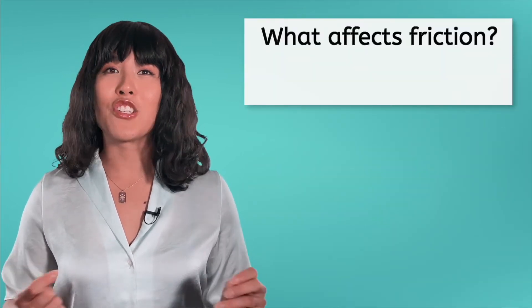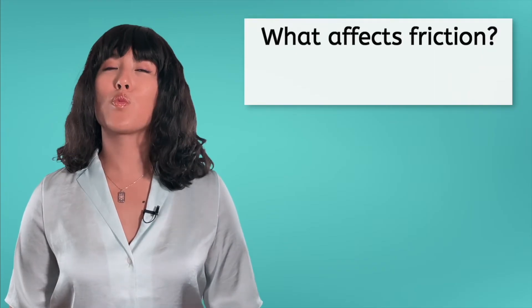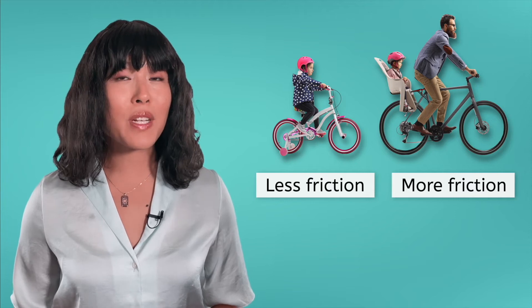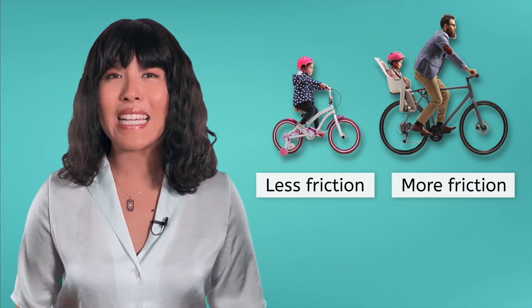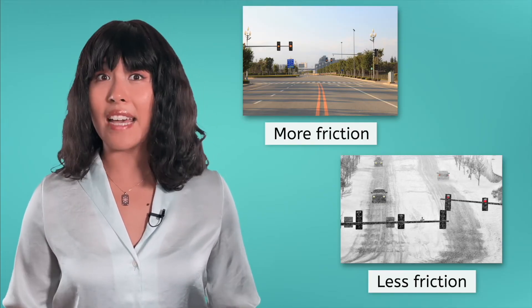Static friction is always greater than both sliding and rolling friction. So the amount of friction we face will depend on the type of motion we are attempting. The two most important factors will be the mass of the object being moved, and the nature of the surfaces involved. Who do you think will encounter more friction: the child biking alone, or the father and child on the same bike? The grown man is definitely going to encounter more friction because of his bike's increased mass. And rougher surfaces such as dry roads provide more friction than more slippery surfaces such as ice and snow.